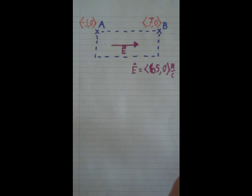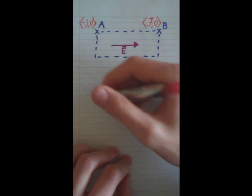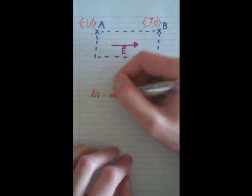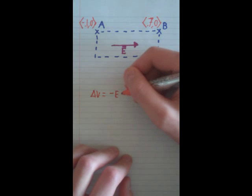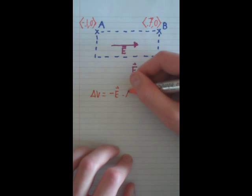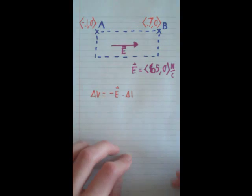We need to write down the equation for electric potential, which is written as volts. Delta V equals negative electric field times change in distance. And this is a very important formula.